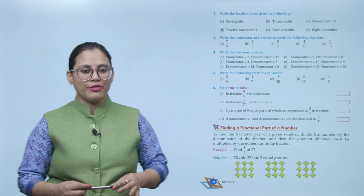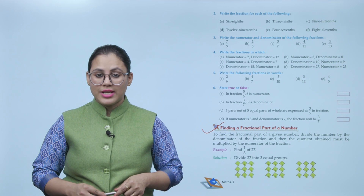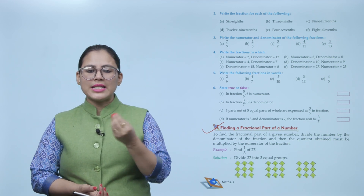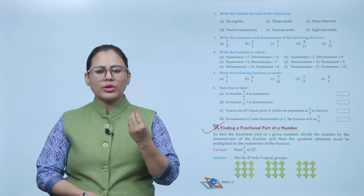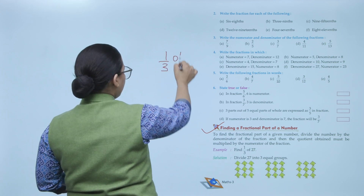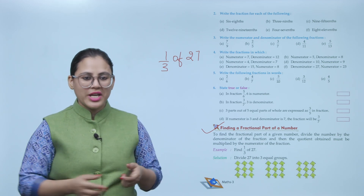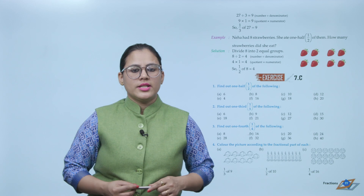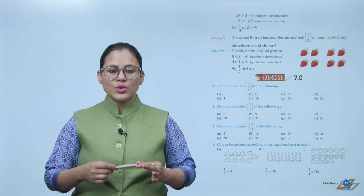Finding a fractional part of a number: To find a fractional part of a given number, divide the number by the denominator of the fraction, then multiply the quotient obtained by the numerator of the fraction. Example: find 1 by 3 of 27. Divide 27 by 3 — that equals 9. Then 9 multiplied by 1 equals 9. So, 1 by 3 of 27 is 9.